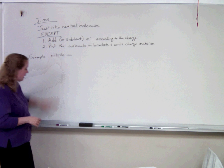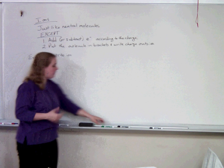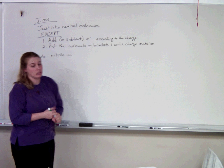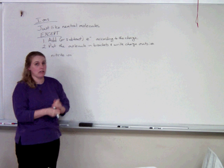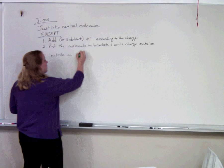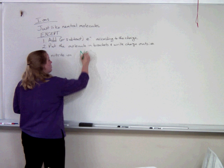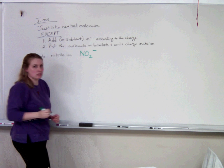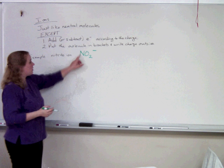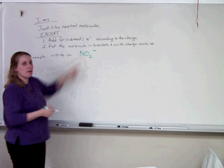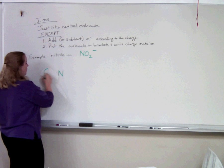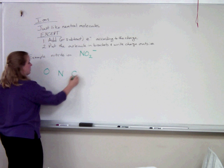So let's try an example: the nitrite ion. The first thing you need to know is the formula for nitrite ion. You should still have your polyatomic ion charges memorized. Nitrite ion is NO₂ with a negative 1 charge. First decision: who goes in the middle? Nitrogen is the oddball, so it's going to go in the middle with the two oxygens on each side.